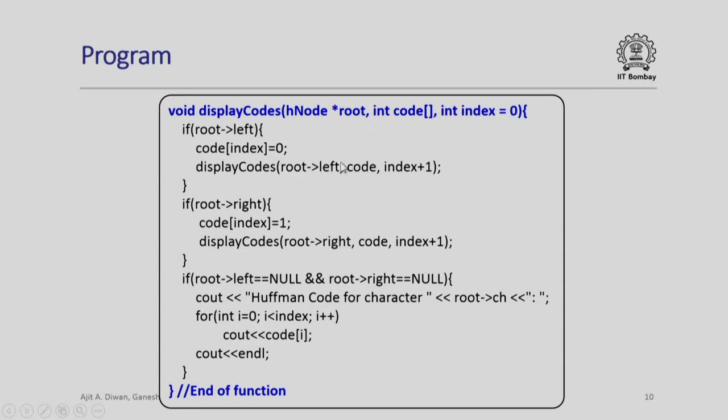Here is the display program which is again simple. If the left of the root exists, then code index is set to 0 and I display codes, root left code index plus 1. If root right returns correct, then code index is set to 1 and we display codes. Here is the main thing.